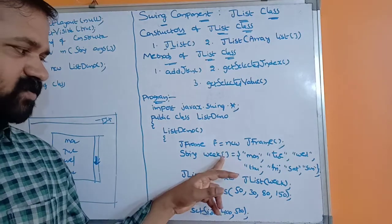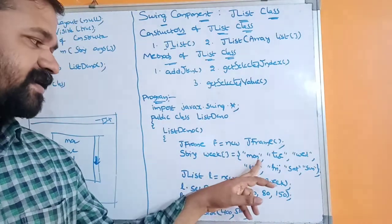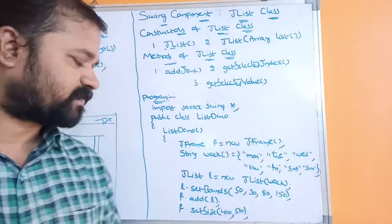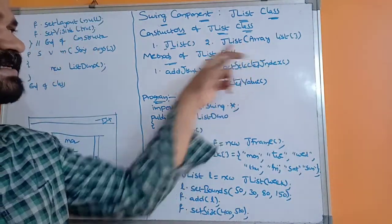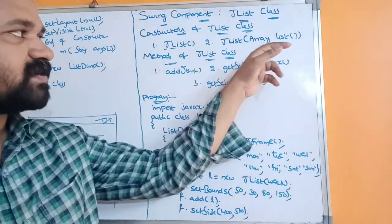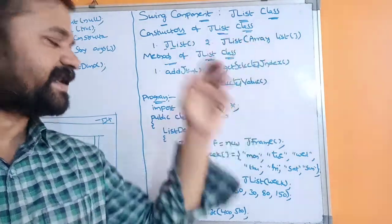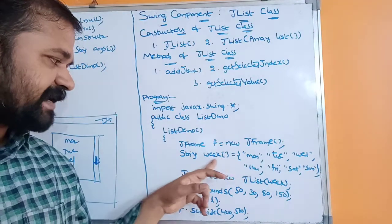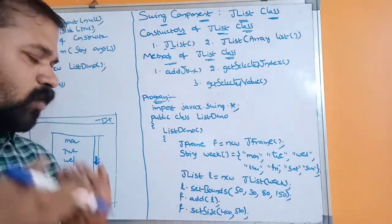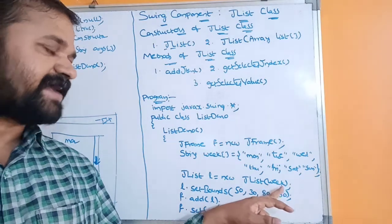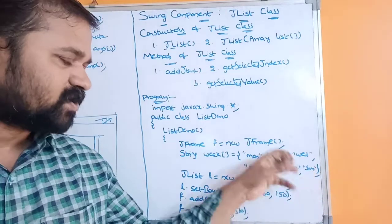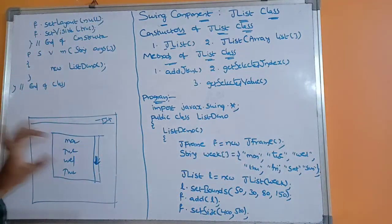The String array is one-dimensional: String week[] and the items are Monday, Tuesday, Wednesday, Thursday, Friday, Saturday, Sunday. Next we use the second constructor syntax: JList l = new JList(week). This constructor accepts an array as the argument, and the name of the array is 'week'. Whenever this statement is executed, the list will be displayed with the items in the week array — from Monday to Sunday.